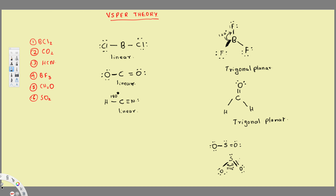This shape looks similar to trigonal planar, but the top part is missing — we don't have a top atom. So this shape is called bent. When we don't have the top atom and the shape looks like this, it's called bent. That's how we determine the 3D shape of these molecules.